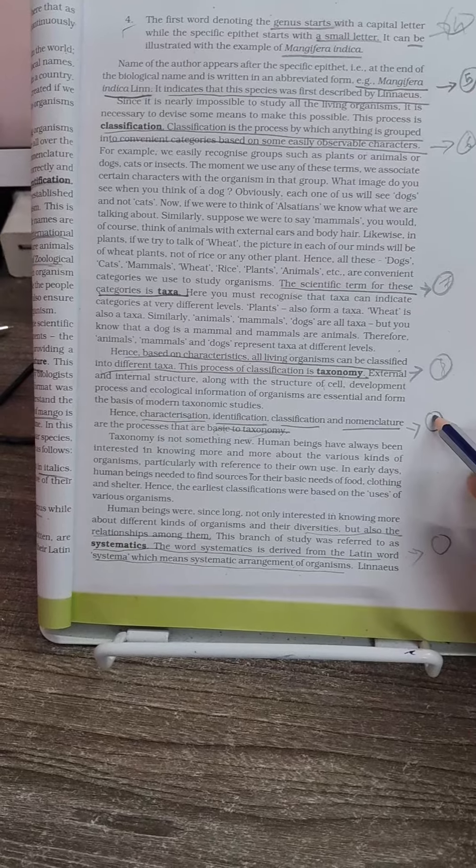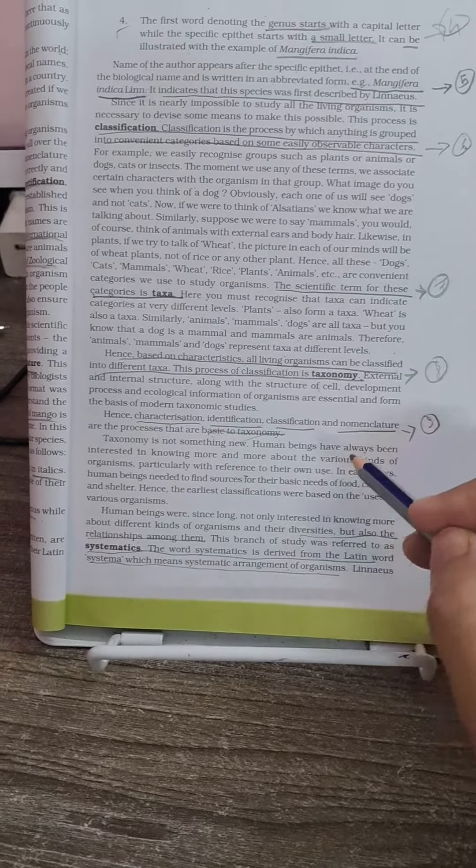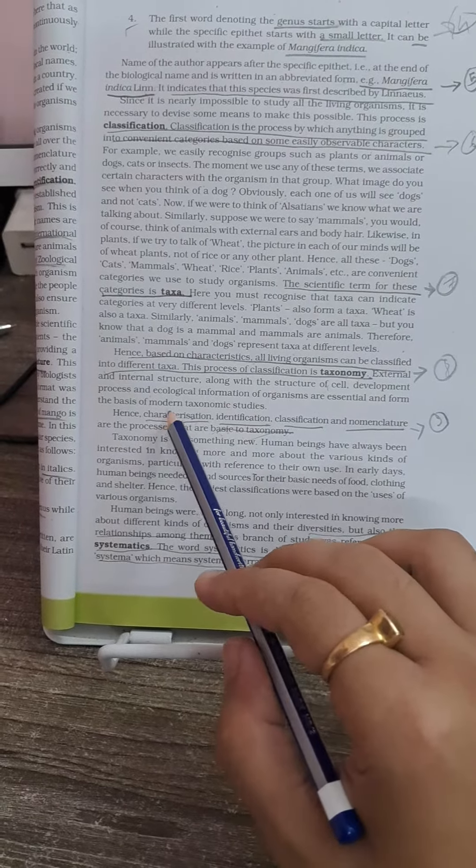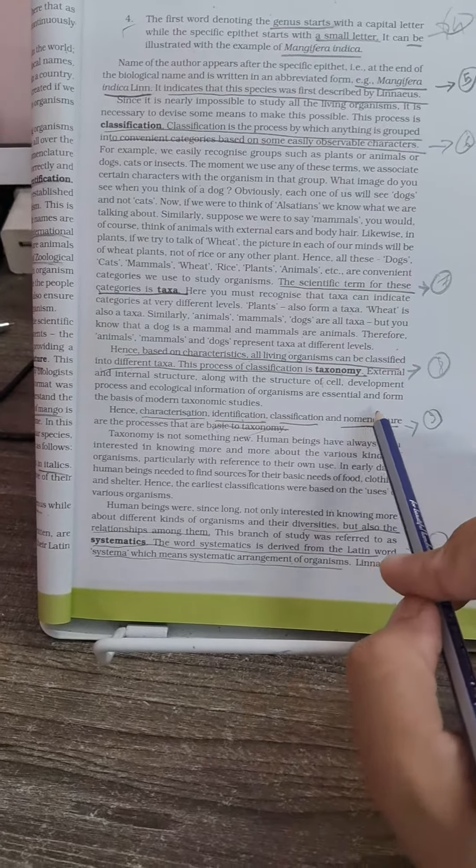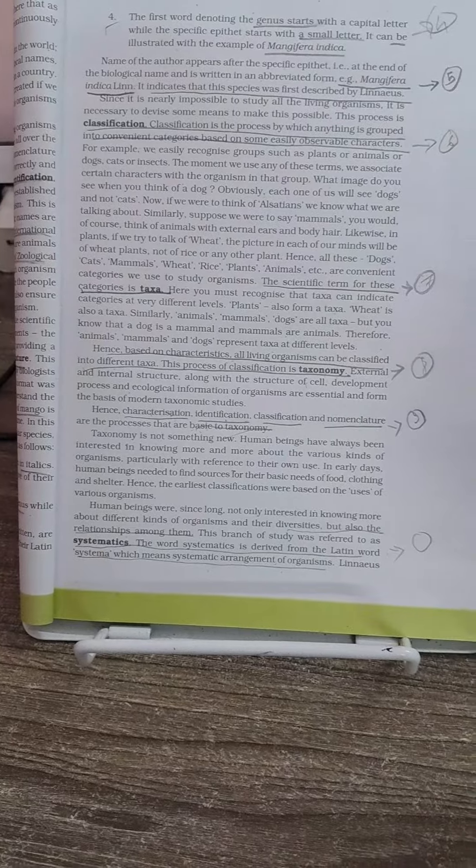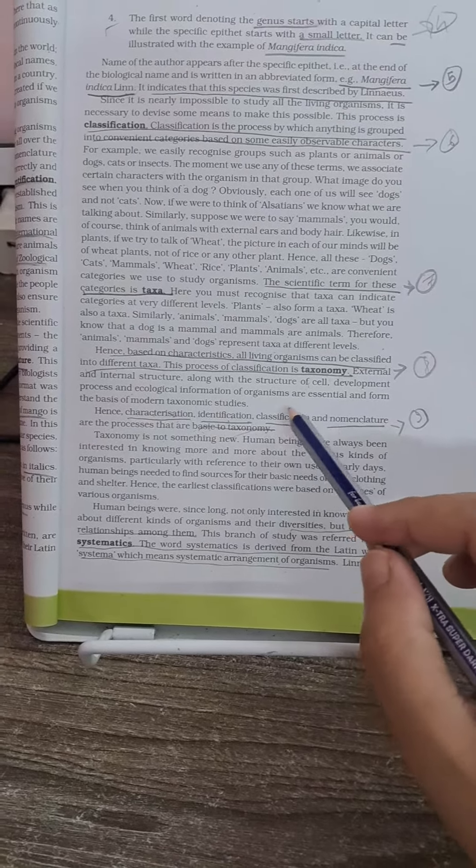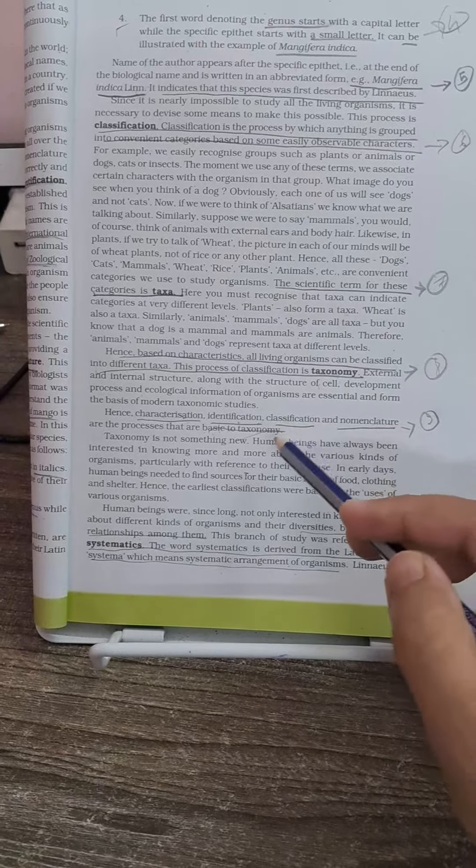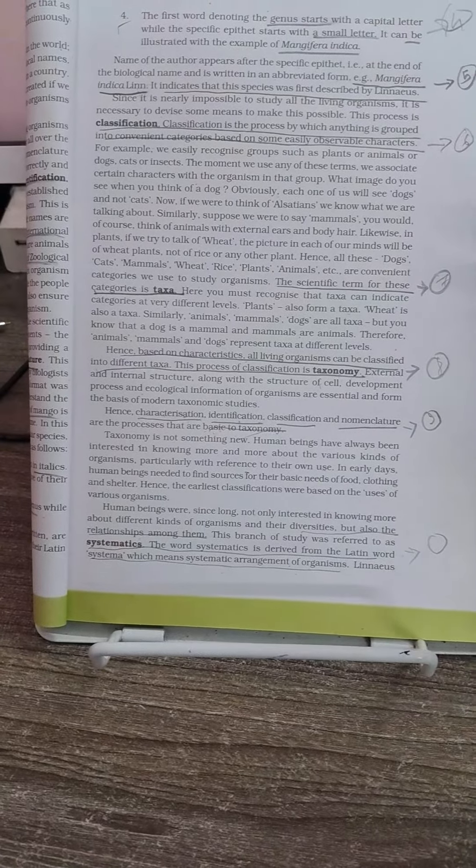Another very important MCQ which is asked many times is the basics of taxonomy. There are four characters: characterization, identification, classification, and nomenclature. They will try to confuse you by replacing one of the terms or giving other terms or deleting something, and they will ask you what is missing.